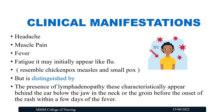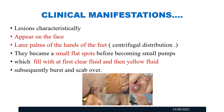The clinical manifestations of monkeypox include headache, muscle pain, fever, and fatigue — it may initially appear like flu. It resembles chickenpox, measles, and smallpox, but is distinguished by the presence of lymphadenopathy. Lymph nodes characteristically appear behind the ear, below the jaw, in the neck, or the groin before the onset of the rash, within a few days of the fever. The lesions characteristically appear on the face and later spread to the hands and feet — a centrifugal distribution of lesions.